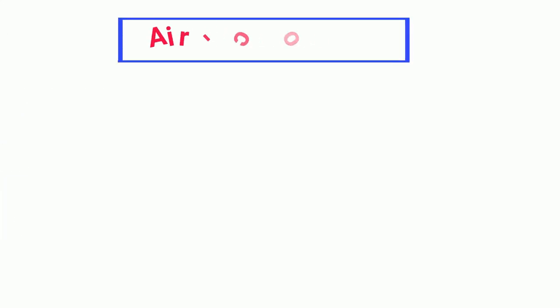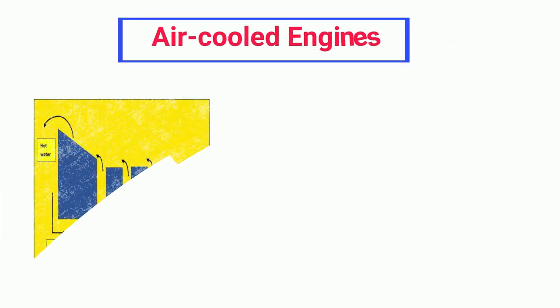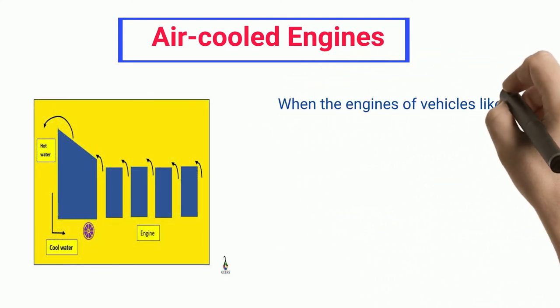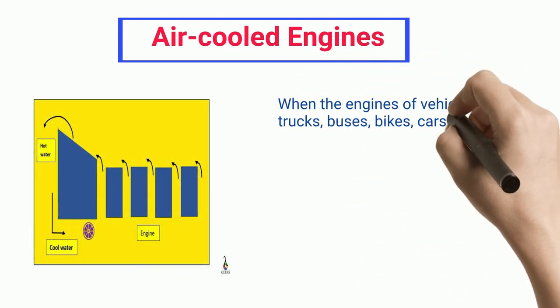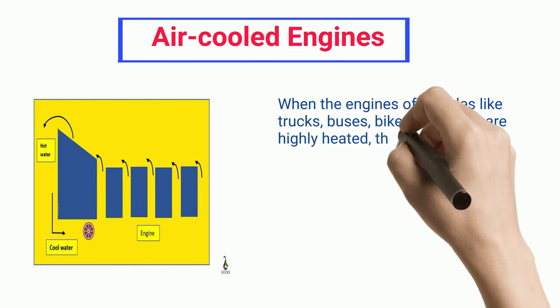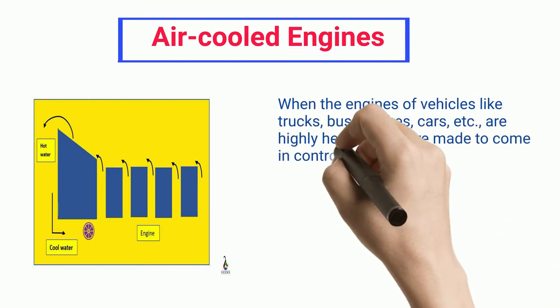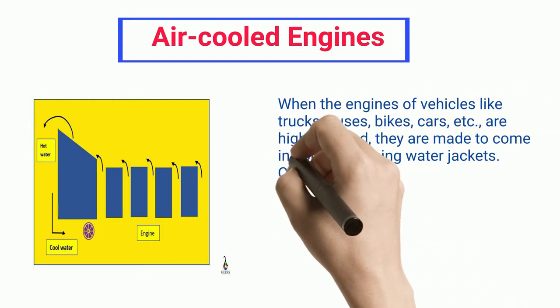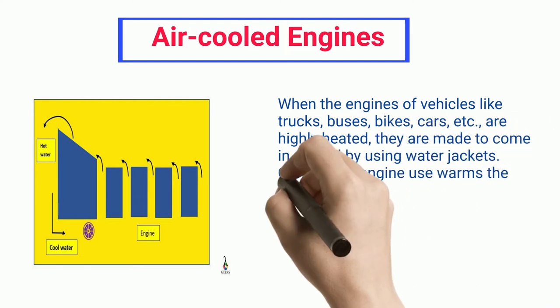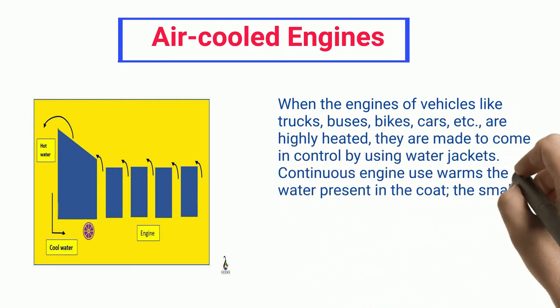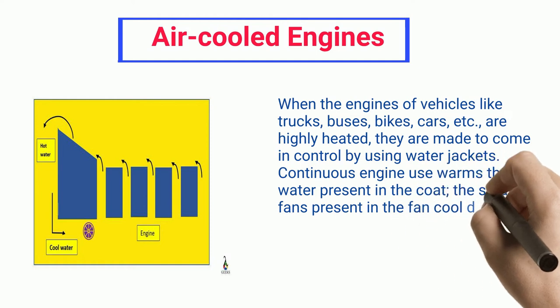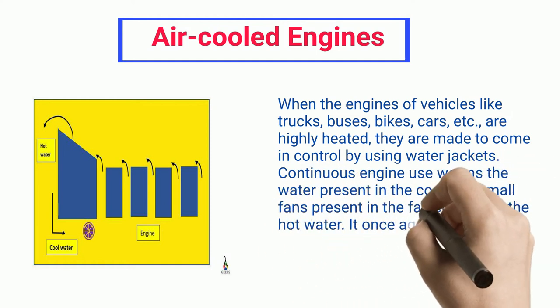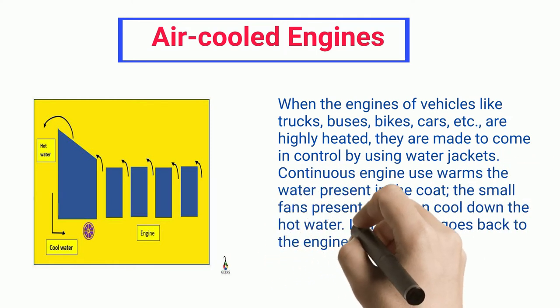Air-cooled Engines: When the engines of vehicles like trucks, buses, bikes, cars, etc., are highly heated, they are made to come in control by using water jackets. Continuous engine use warms the water present in the coat, the small fans present in the fan cool down the hot water. It once again goes back to the engine resulting in the process of convection.